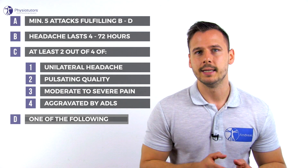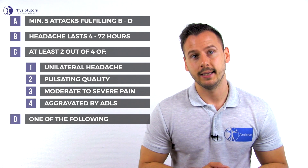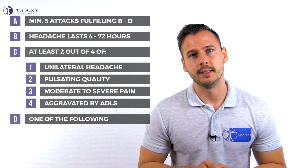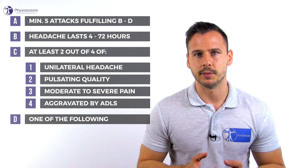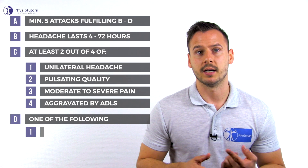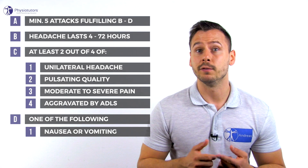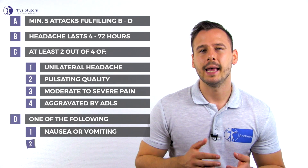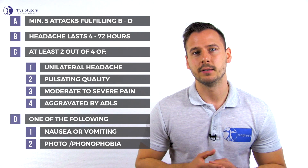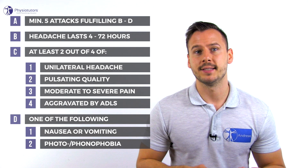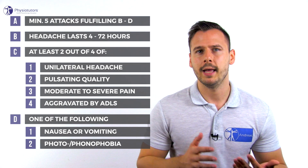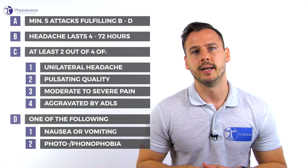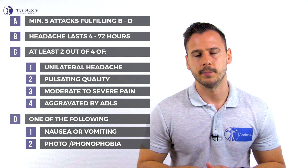Criterion D: next to the headache, patients have at least one of the following additional symptoms. These are nausea or vomiting, and being sensitive to bright lights and sounds — called photophobia and phonophobia, respectively.